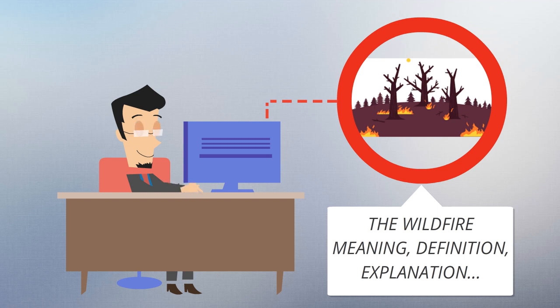Depending on the type of vegetation where it occurs, a wildfire can also be classified more specifically as a brush fire, bush fire, desert fire, forest fire, grass fire, hill fire, peat fire, vegetation fire, and veld fire.